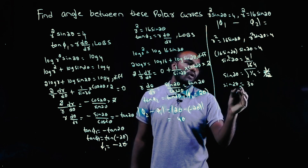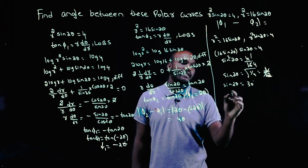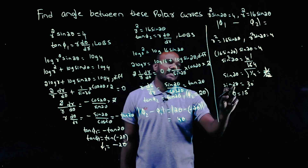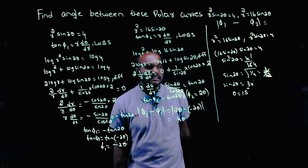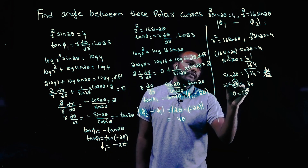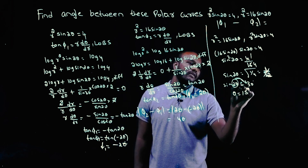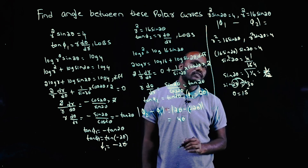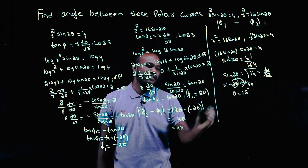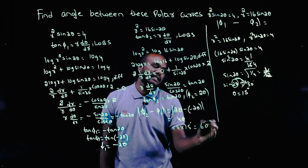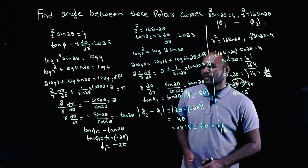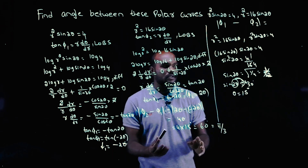Since sin2θ = 1/2, we have 2θ = 30°, so θ = 15°. Substituting into the angle: 4θ = 4 × 15° = 60°, or equivalently π/3. So the angle between the two polar curves is 60° or π/3.